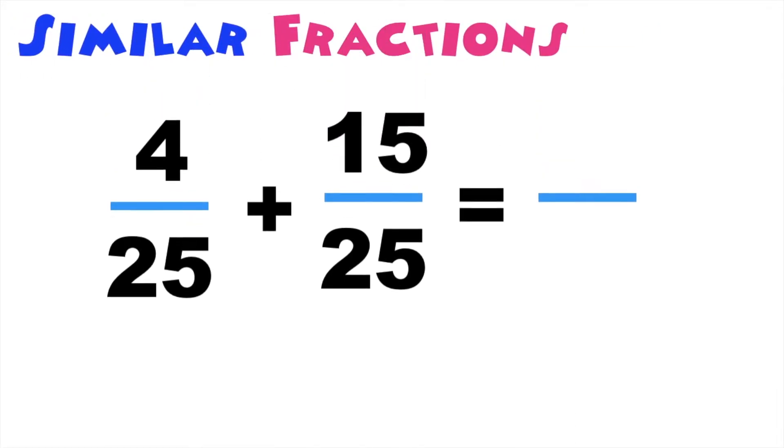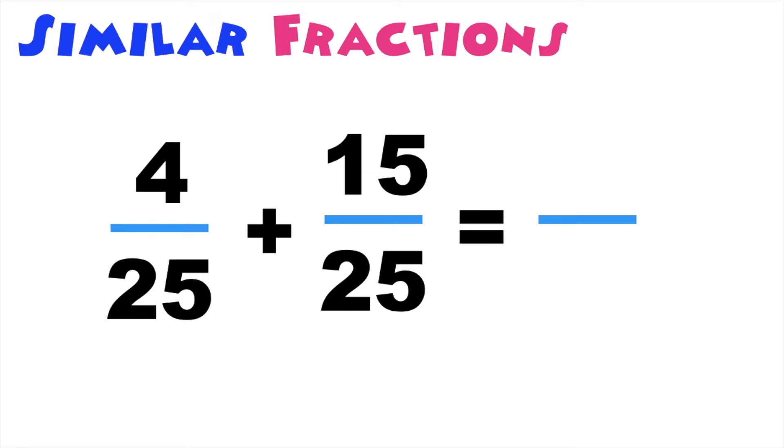How about if we have this? 4 over 25 plus 15 over 25. We have 25 as the denominator, so we will copy 25. Then add the numerators. 4 plus 15 is equal to 19. So we have 19 over 25.